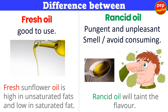Difference between fresh oil and rancid oil. Fresh oil is good to use. Example: Fresh sunflower oil is high in unsaturated fats and low in saturated fat. Rancid oil has a pungent and unpleasant smell and you should avoid consuming it. Example: Rancid oil will taint the flavor.